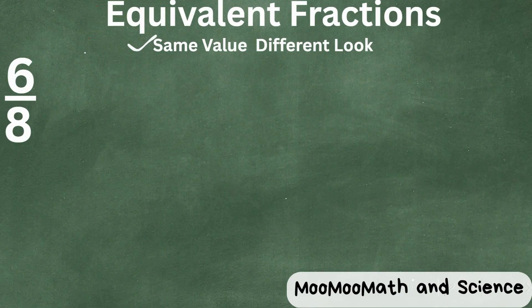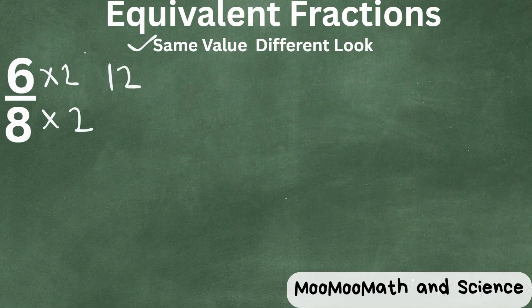We can begin by finding an equivalent fraction by multiplying the numerator and the denominator by 2. When we do that, we have 12/16ths. So that is an equivalent fraction of 6/8ths.